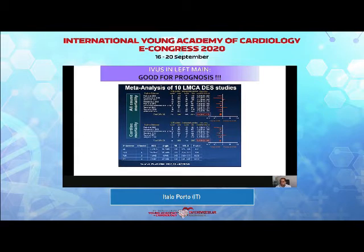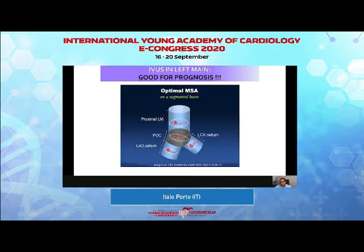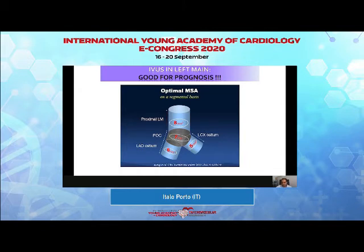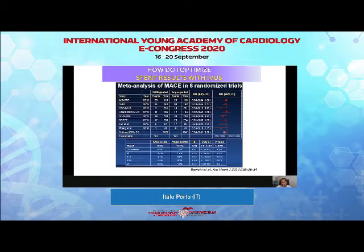If you need to stent the left main, you should use IVUS to guide the procedure, because IVUS guidance is associated with improved hard endpoints. You should aim for straightforward targets: 5 mm² in the circumflex ostium, 6 mm² in the LAD ostium, 7 mm² in the polygon of confluence, and 8 mm² in the proximal left main. If you obtain these values at post-PCI evaluation, you are performing a good PCI. These optimal results are associated with optimal long-term prognosis.